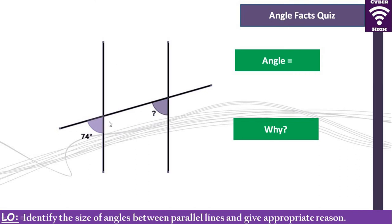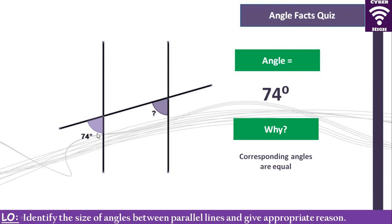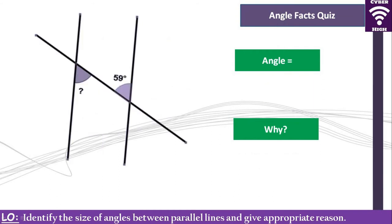In a normal exam, you can be given the same question but with the arrows facing the other way. You are allowed to turn your paper around so you can see properly. What is the size of the angle marked with a question mark? It is 74 degrees. Why? These are corresponding angles — corresponding angles are equal, and this angle is in the same position as the other.